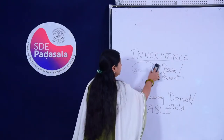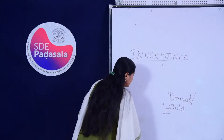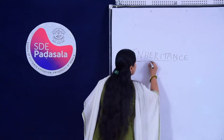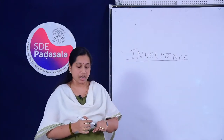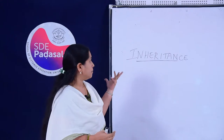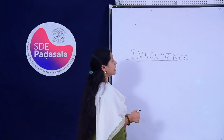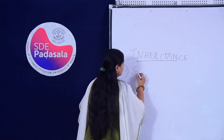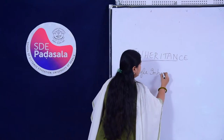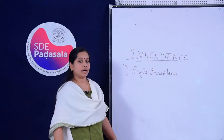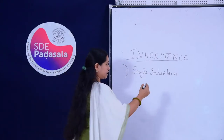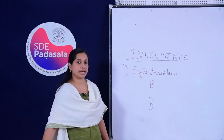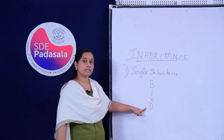Now we will see the different types of inheritance — the classification. Inheritance is classified based on how many base classes and how many derived classes are used. Based on that, you can classify inheritance into five different types. The first one is single inheritance.